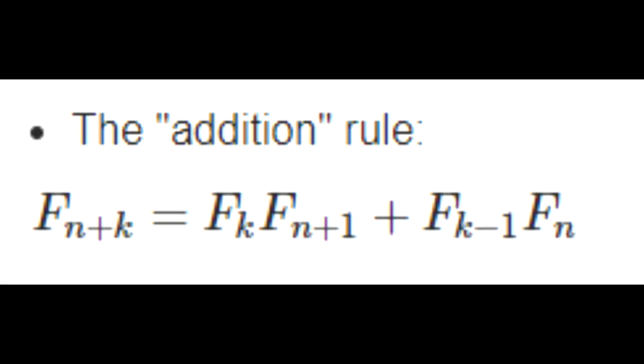Alright the next rule is the addition rule. So basically it's taking the current term and if I jump by k steps to the right, that term is going to be whatever value is at that k step multiplied by the next term added by the previous term for the k value multiplied by the current term.